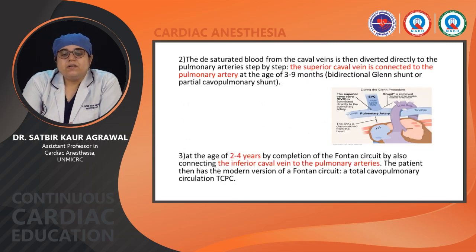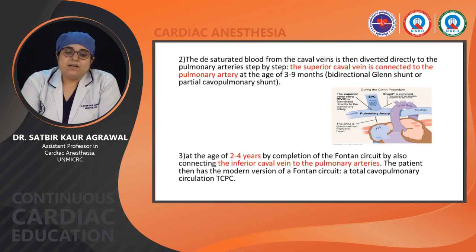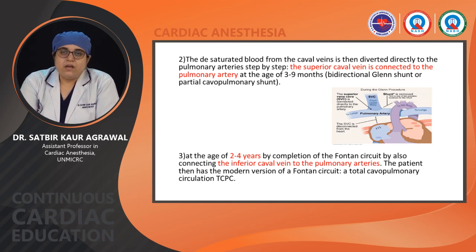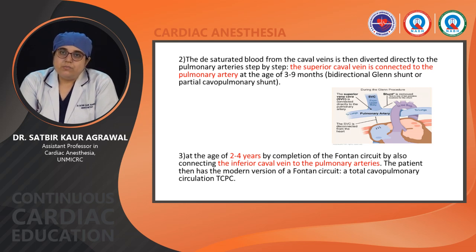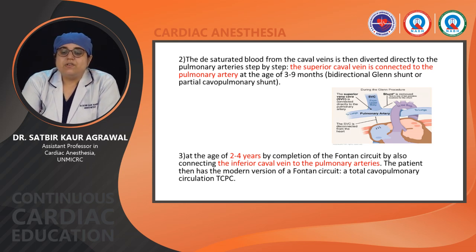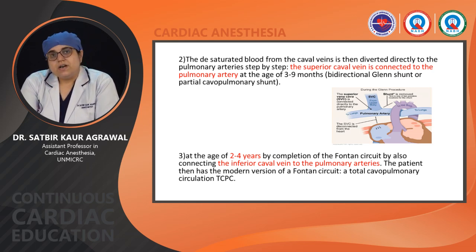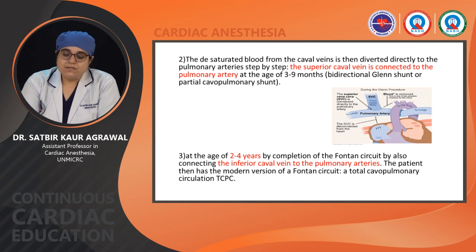The second stage of palliation comes at around 3 to 9 months of age when the superior vena cava is connected to the pulmonary artery — called the bi-directional Glenn shunt or partial cavopulmonary circulation. Here, half of the venous drainage is already going into the pulmonary arteries, so the volume overload problem is solved by half. The final stage of palliation comes at around 2 to 4 years, in which the inferior vena cava is also connected to the pulmonary arteries — the modern total cavopulmonary circulation.